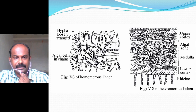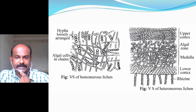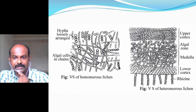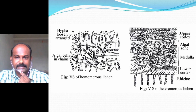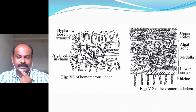In homeomerous lichens there is no distinct zonation — the hyphae are loosely arranged and algal cells are trapped among them. In heteromerous lichens there is a distinct upper cortex, lower cortex, a distinct algal zone, and a medullary zone. Rhizines arise from the lower cortex and help in attachment.